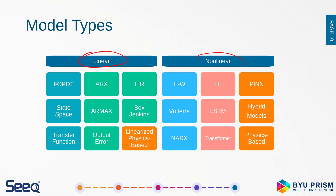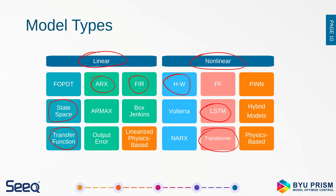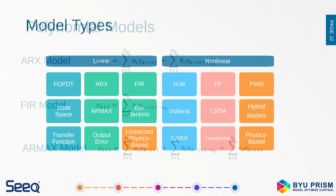There are many different types of models: linear and nonlinear. Linear models include state-space models, transfer functions, autoregressive with exogenous inputs (ARX), and finite impulse response (FIR). On the nonlinear side, we have LSTM models (long short-term memory), Hammerstein-Wiener models, and transformers. These can be physics-informed neural networks or pure physics-based models. The choice depends on process knowledge and data availability.